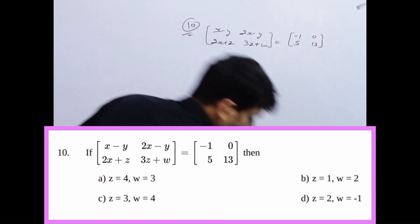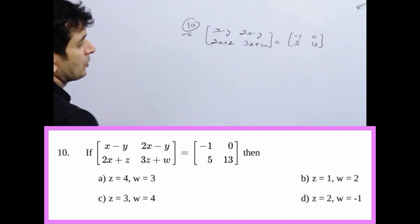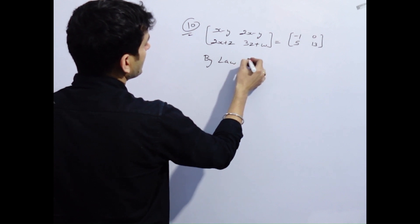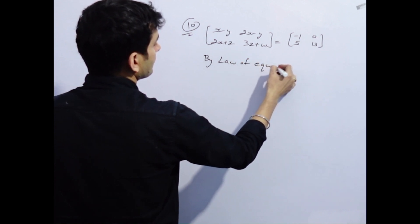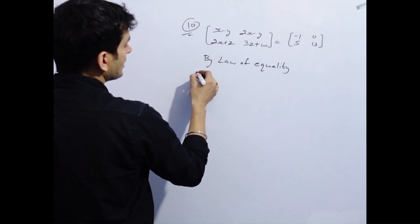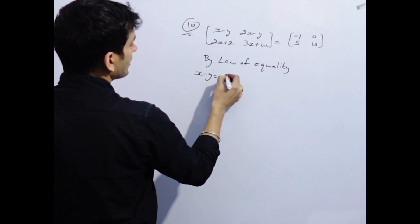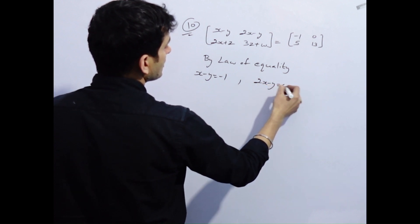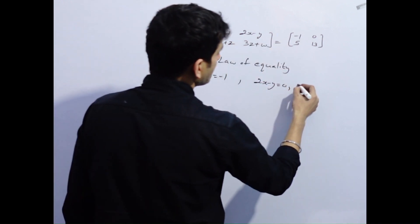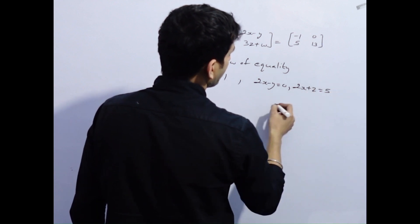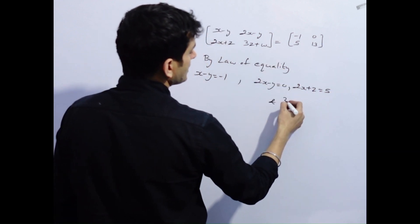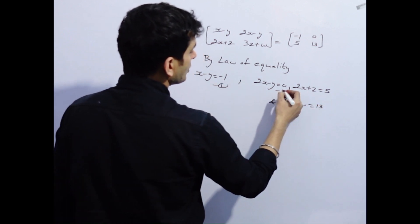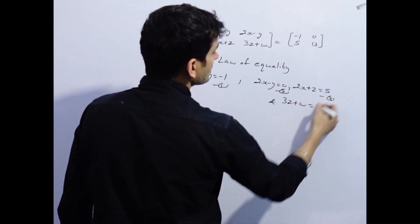Different values आपको given हैं. By law of equality: x minus y किसके equal होगा? Minus 1. 2x minus y किसके equal होगा? 0. 2x plus z किसके equal होगा? 5. And 3z plus w किसके equal होगा? 13. इसको equation 1, equation 2, equation 3, और equation 4 ले लेते हैं.